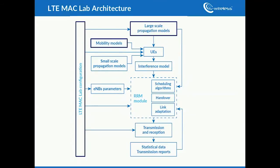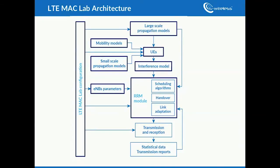Mobility models are responsible for updating positions of the terminals. UEs keep context of the terminals. Small-scale propagation models reflect channel fading. The interference model maps current radio conditions to SINR values. E-NodeB parameters store the current state of all the base stations. The radio resource management module is the heart of LTE MacLab, responsible for functionalities like scheduling, handovers, and link adaptation.